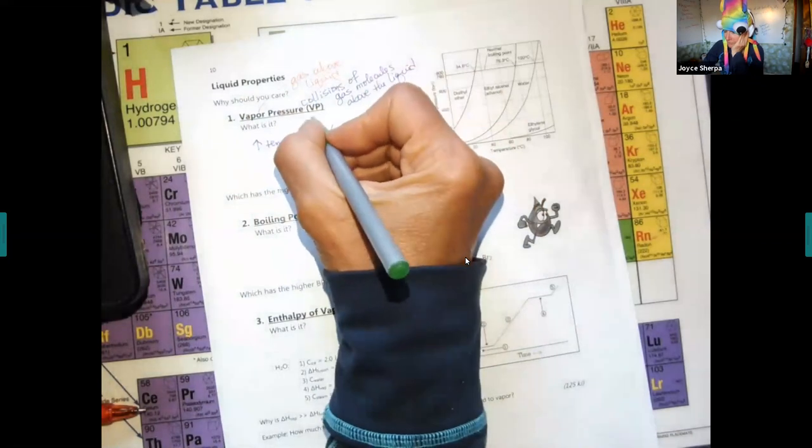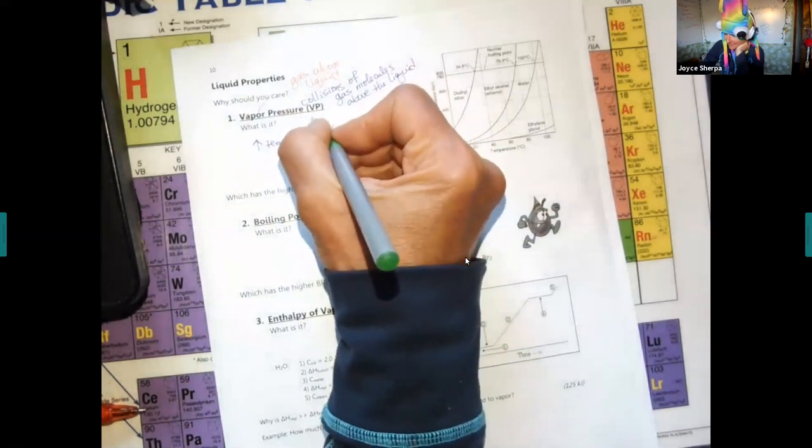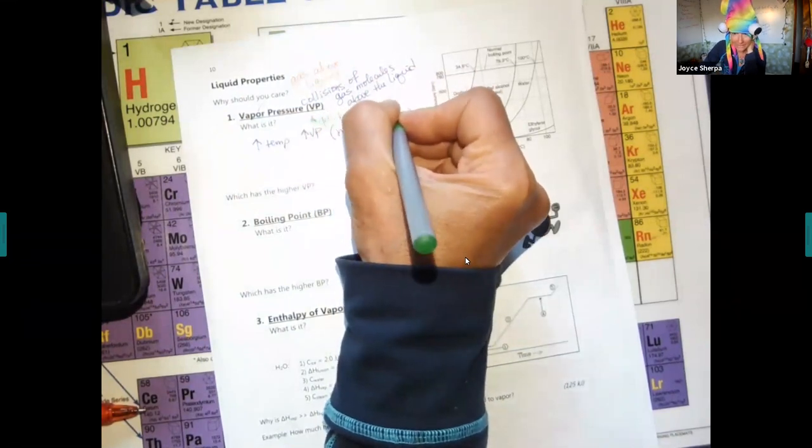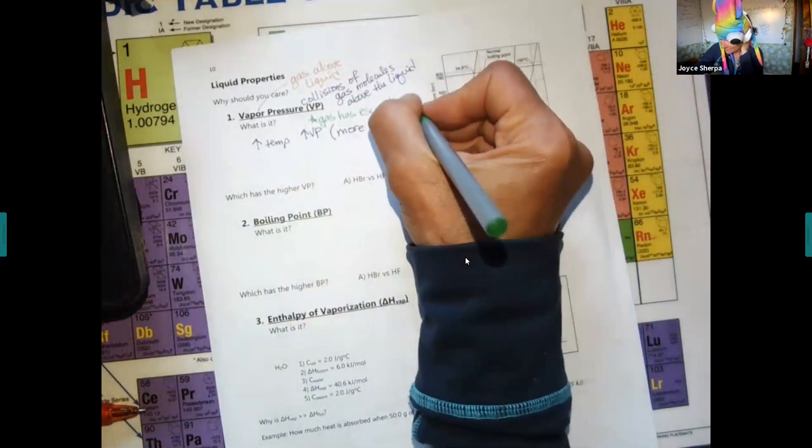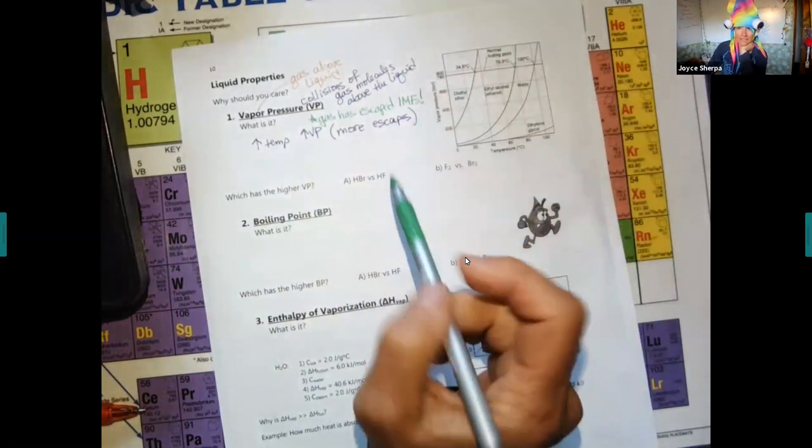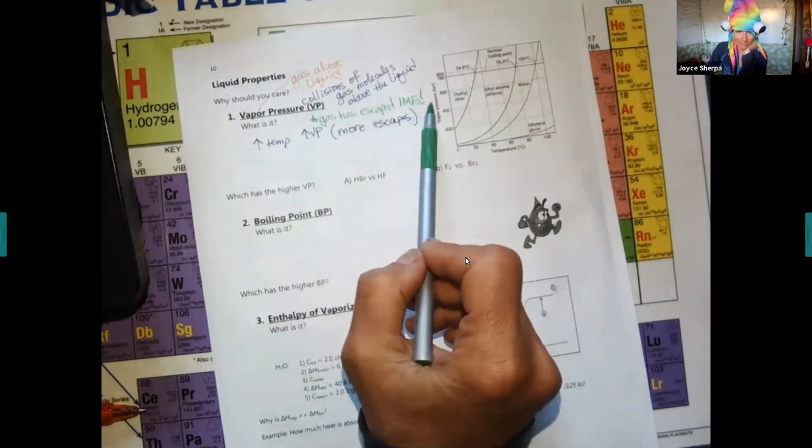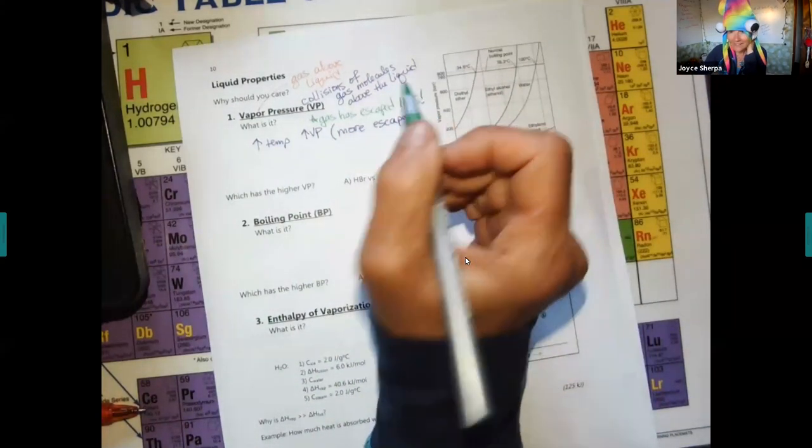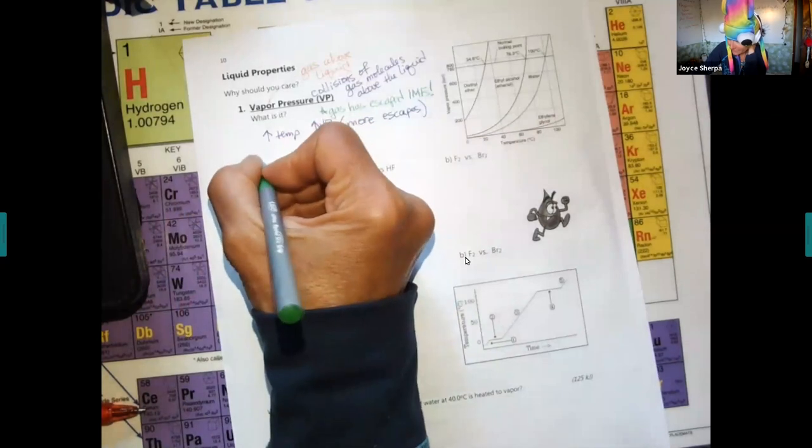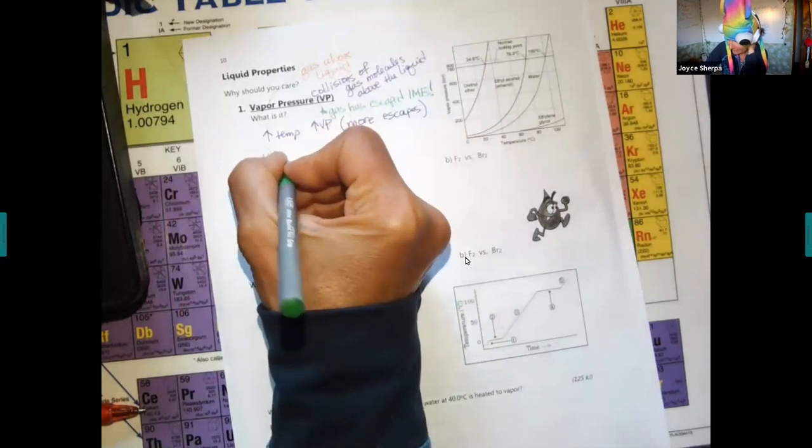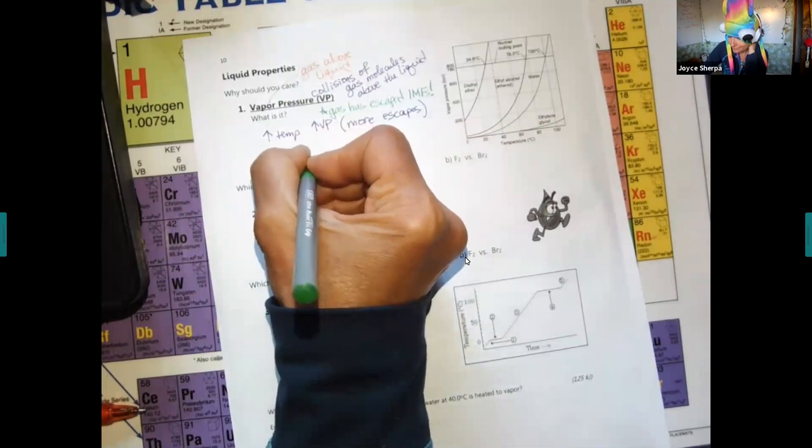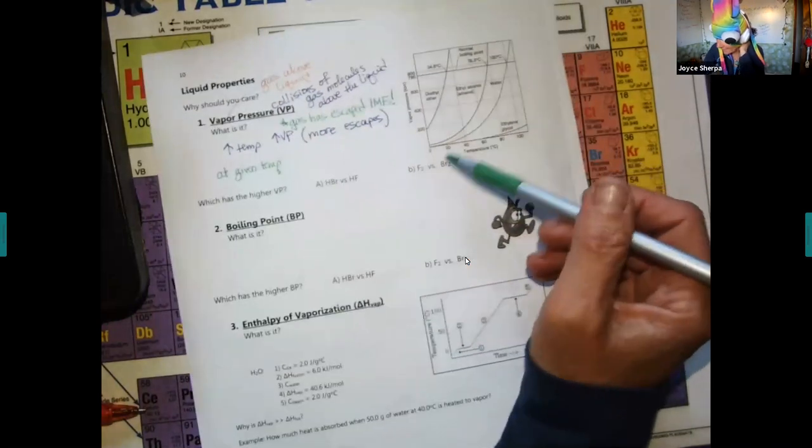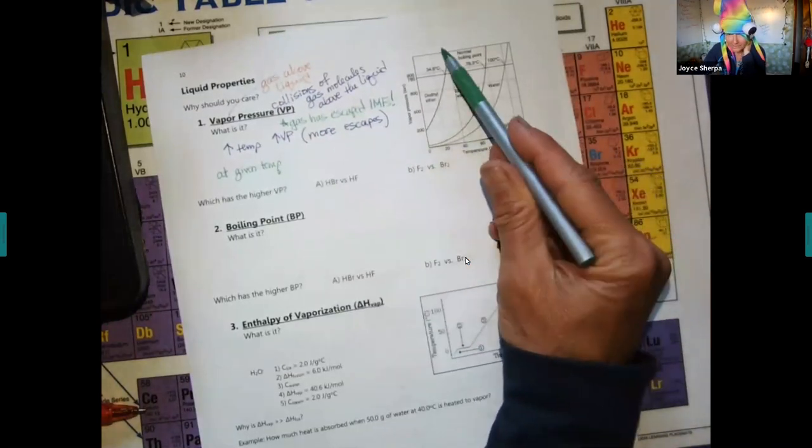The big thing that's happening with vapor pressure is the gas has escaped. The big difference between a liquid and a gas is the IMF. It's the gas that's escaped the IMFs that were holding it into the liquid state. At a given temperature.